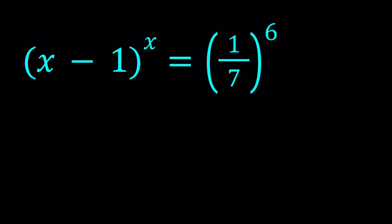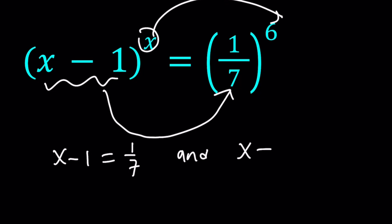For example, could x minus 1 be equal to 1 over 7 and x equal to 6? And the answer is no, because if x is 6, this is going to be 5, or if x is 8 sevenths, it's not going to be 6. So this is not possible.